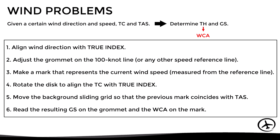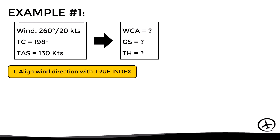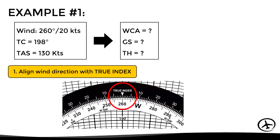This may sound a bit complex, so let's look at this through an example. We have to determine the wind correction angle, true heading, and ground speed, given a wind of 260 degrees at 20 knots, a true course of 198 degrees, and a true airspeed of 130 knots. The first step is to align the wind direction, which in this case is 260, with the true index, as we can see in this image.